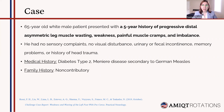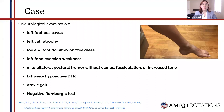His medical history included diabetes mellitus type 2. There were no family history of neurological disease or chronic disease. His neurological examination included left foot pescavus, left calf atrophy, toe and foot dorsiflexion weakness, left foot eversion weakness, mild bilateral postural tremor without clonus, fasciculation, or increased tone.